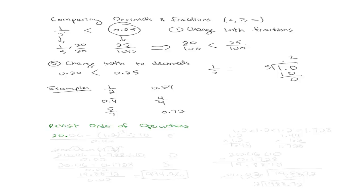So let's say we have the problem 20 and 6 hundredths minus 1 and 2 tenths cubed divided by 10 all over 2 hundredths. So according to the order of operations, what should I do first here? Exponents, right?